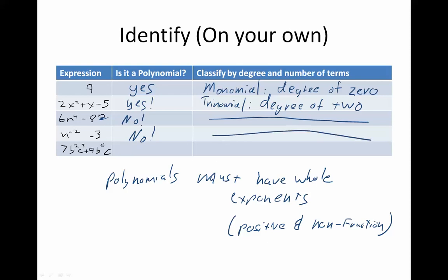Finally, 7b² c³, plus, it's supposed to be a 4. That got mixed up. 4b to the 4th, that's a 4. c. Is this a polynomial? Yes. Exponents are whole and positive, right? Non-fraction and positive, so that's it.